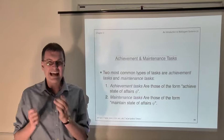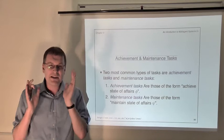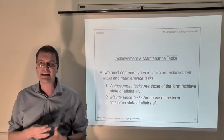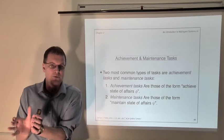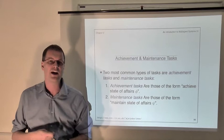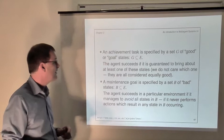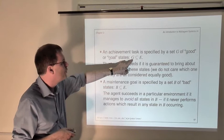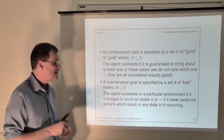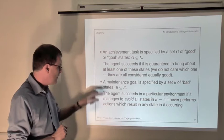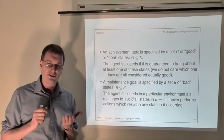With a maintenance task, on the other hand, we specify a set of bad states that we want the agent to avoid. You can do whatever you like, but don't ever end up in one of these bad states. For example, make sure that the reactor never melts down — the states where the reactor melts down are the bad states, and we simply want our agent to avoid those. They're called maintenance tasks because we can think of the agent as maintaining some state of affairs — it's not maintenance as in fixing something. We specify achievement tasks by defining a set G of good or goal states, and the agent succeeds if it's guaranteed to bring about one of these. With a maintenance task, we specify a set of bad states and don't care what the agent does as long as it avoids them.